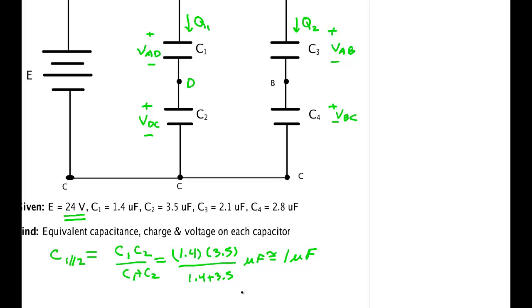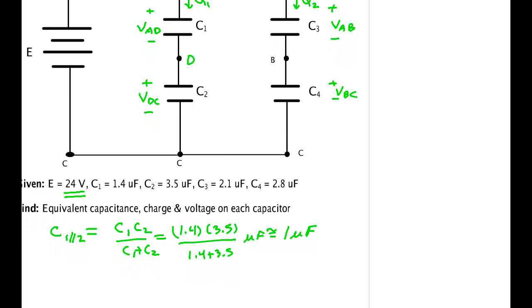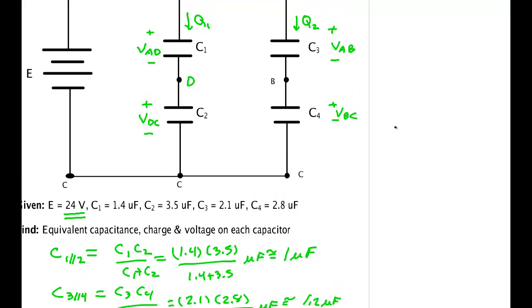C3 and C4 are in series, so C_34 equals C3 times C4 over C3 plus C4. This time we've got 2.1 times 2.8 over a total of 4.9 microfarads. We punch that into the calculator and get 1.2 microfarads, which again makes sense.